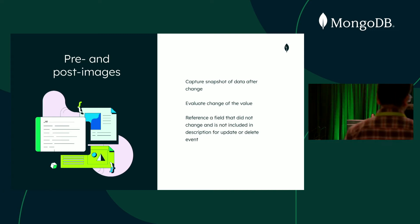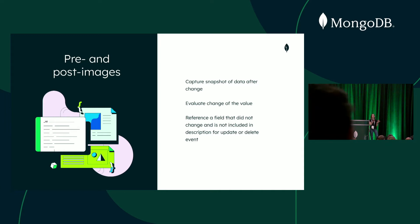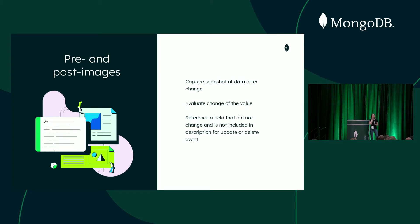Or you need a field from a document that was deleted. For example, in a content management system a user creates a draft with attachments, then decides to delete it — but that document has links to files in S3, so you need to purge those files, and you need to know the location of those files. If the document is deleted, you no longer have them. Usually there are workarounds, like flipping a deleted flag and then doing the purge, but that's a workaround for not having pre-images.